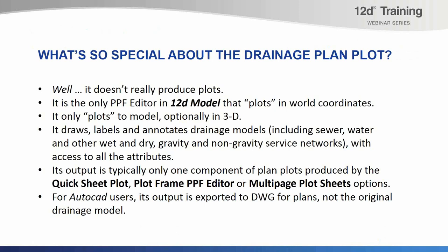We need to subsequently plot it out of 12D — it's normally just a component on a drawing. You might include other things like contours, road design strings, and catchment plans together with the output from the drainage plan plot PPF editor, then plot all that using either a quick sheet plot, the plot frame PPF editor, or the newer multi-page plot sheets options. For anyone using AutoCAD, it is the output from the drainage plan plot that is exported to DWG for plans assembled in AutoCAD, rather than exporting the original drainage model, because AutoCAD doesn't have a drainage string.